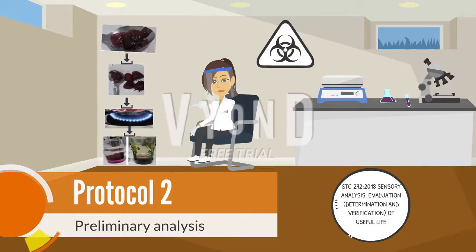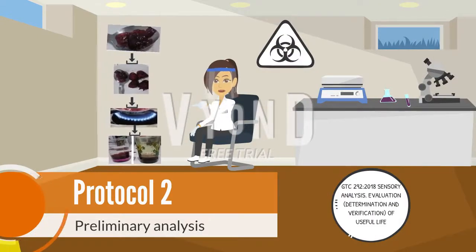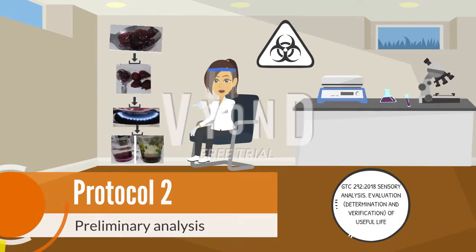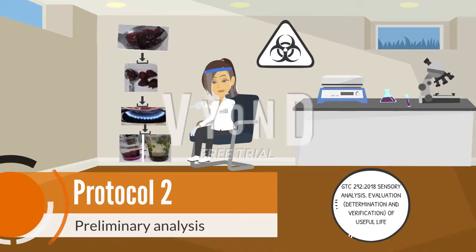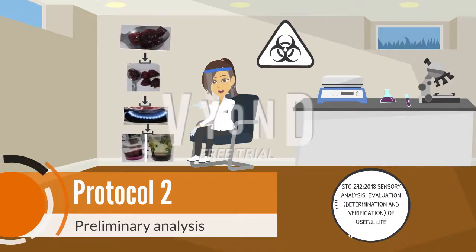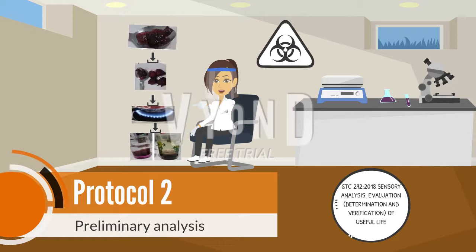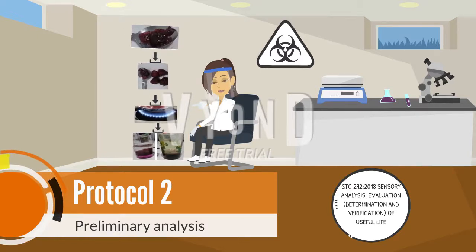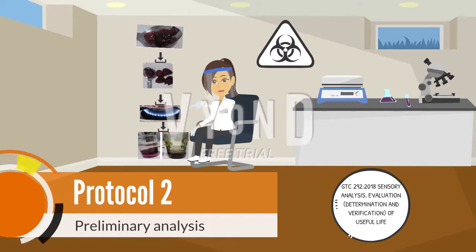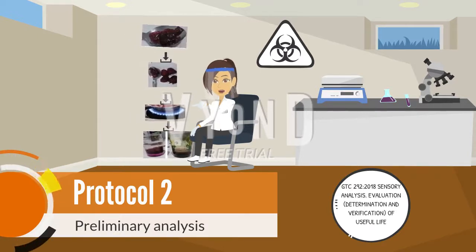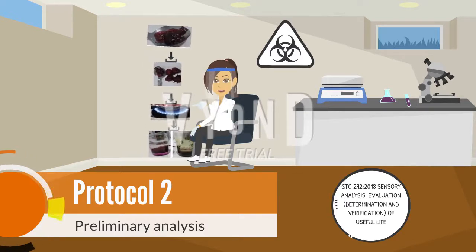Protocol two is preliminary analysis, which is composed of sensory properties: taste, touch, sight, and smell. We must bear in mind that blackberry jam is insoluble in water, acidic, as well as bicarbonate. To carry out this laboratory, we use the GSTC 292-2018 Sensory Analysis standard.